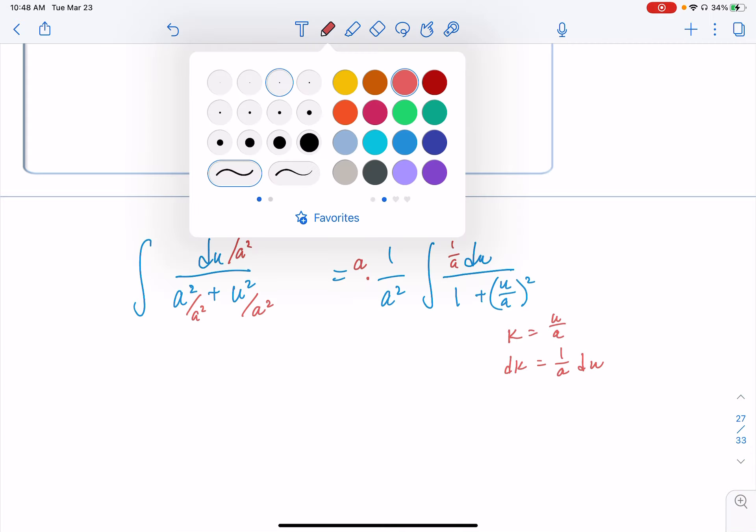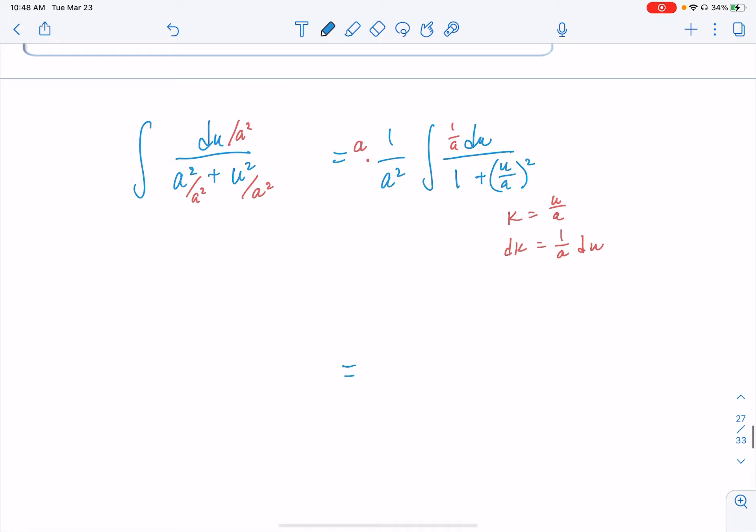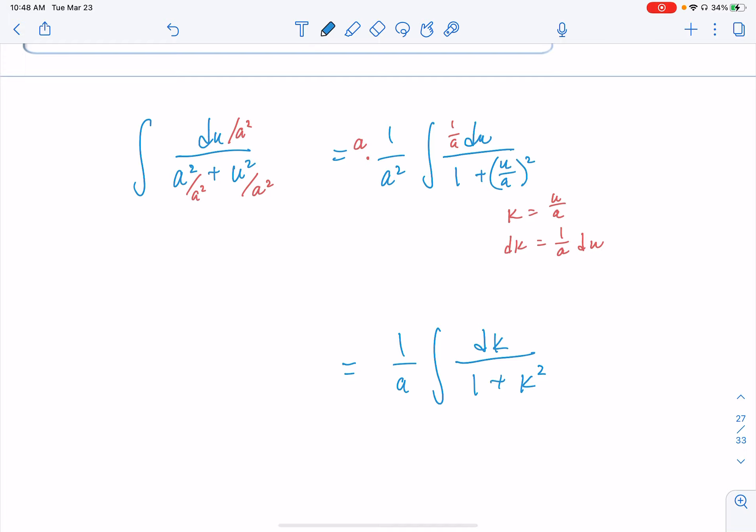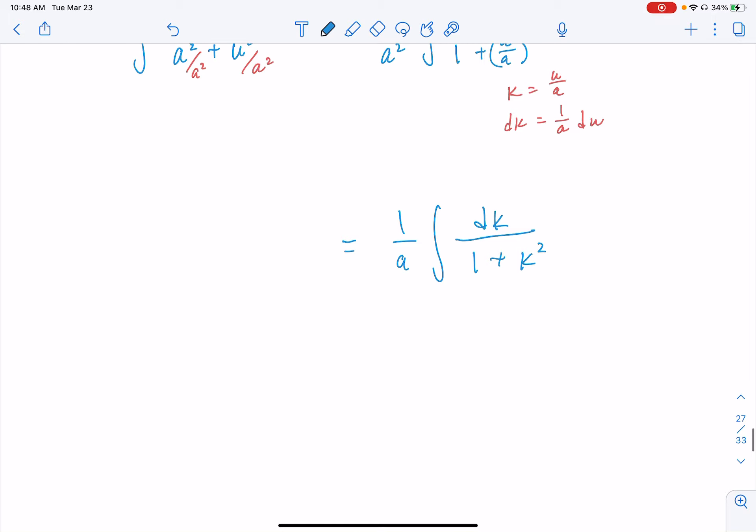When we simplify, the a/a² on the outside becomes 1/a. The integral of (1/a)du becomes dk over (1 + (u/a)²), which becomes dk/(1 + k²). Now it's a straightforward application of the arctangent rule. This equals (1/a)arctan(k) + c.